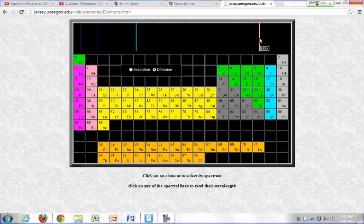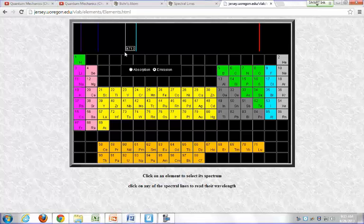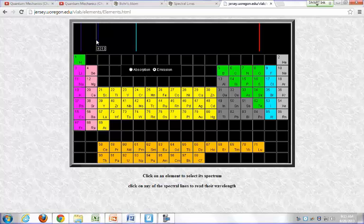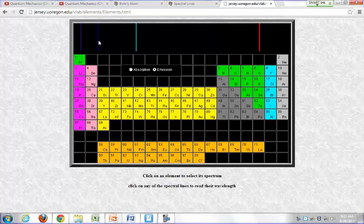This thing right here, that's bluish, is around 487 nanometers. So if you drag your mouse, it brings up a cursor that tells you what the wavelength of the lines are.